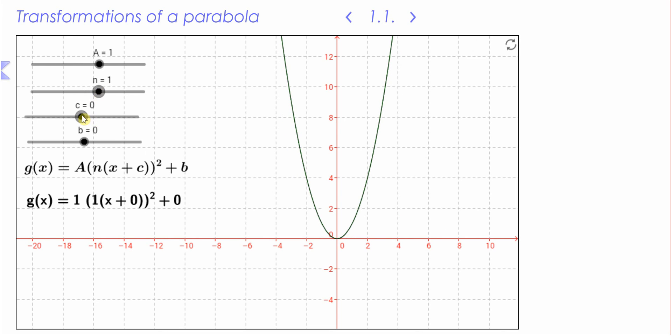Let's have a look what the value of c does. I'm going to increase that. Note that c is actually being squared as well. You add c to x, multiply it by n, and then square it. So you can see that as I'm increasing c, it's moving to the left. What you need to know about c is that it just translates the whole graph horizontally, but in the opposite direction of the sign of c.